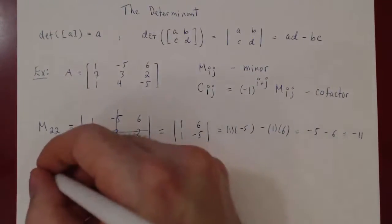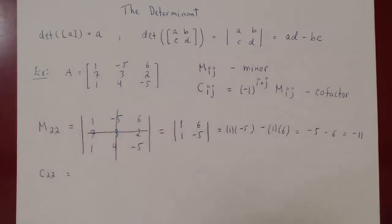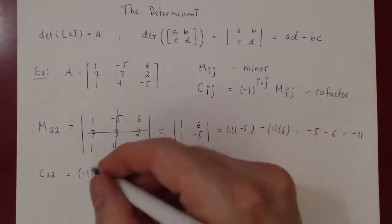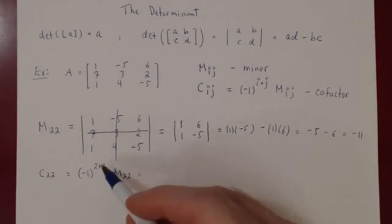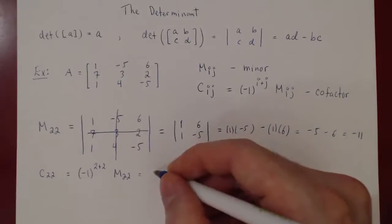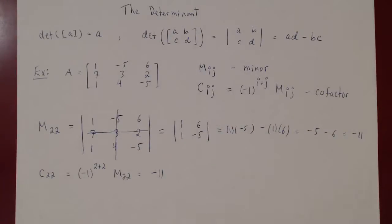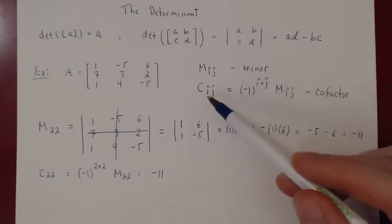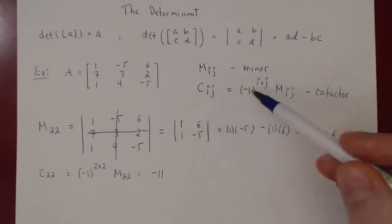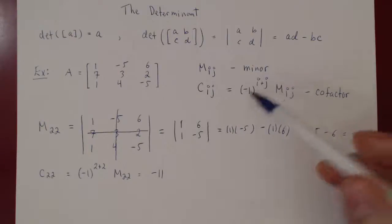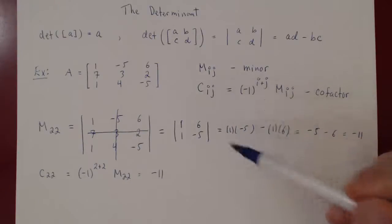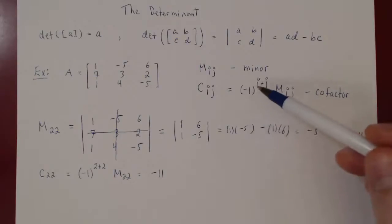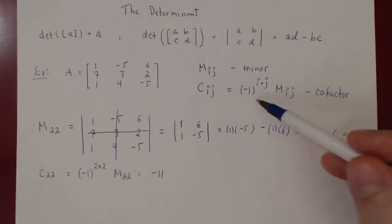The corresponding cofactor C22 is negative 1 to the power 2 plus 2, which is 4, times M22. Negative 1 to the 4th is just 1, so C22 equals M22, which is negative 11. If the row index plus column index is even, negative 1 to an even power is positive 1, so the cofactor equals the minor. If the sum is odd, the cofactor is simply the negative of the minor.